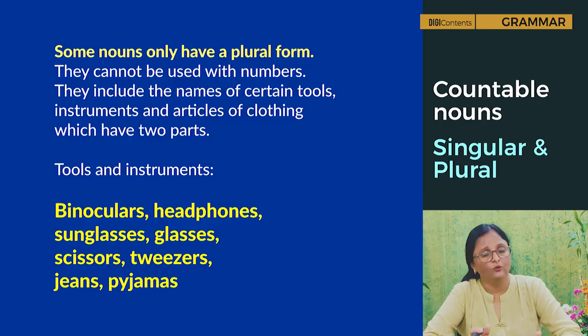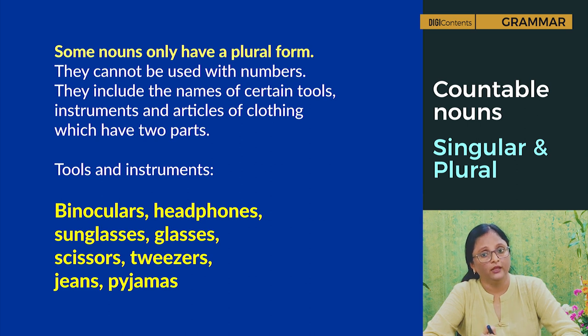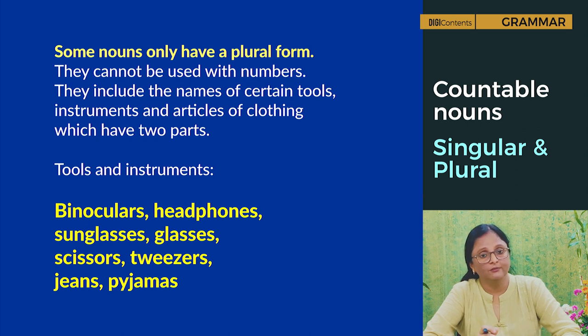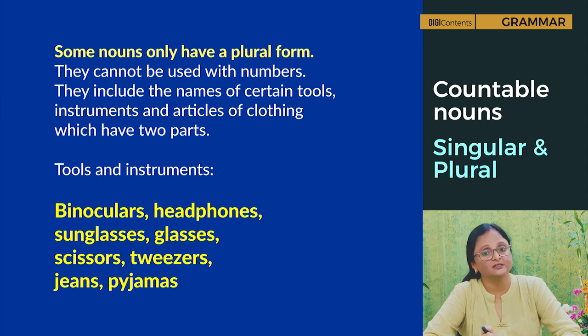The word 'news' is also singular only: 'Maths was never my favourite subject at school.' 'Aerobics is great fun — you should try it.' Nouns used only in the plural: some nouns only have plural form and cannot be used with numbers. These include names of certain tools, instruments, and articles of clothing which have two parts: binoculars, headphones, sunglasses, scissors, jeans, pyjamas, trousers.